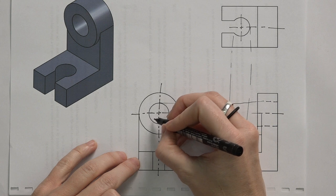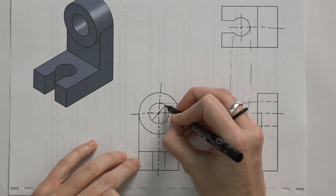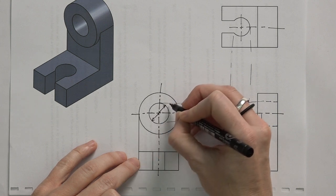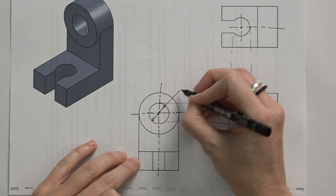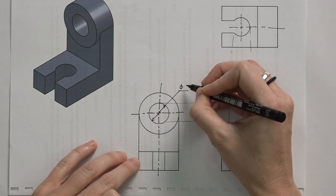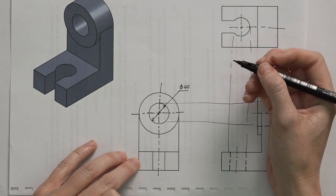So remember we had this before. We had a circle and we draw the dimension line through the center at a 45 degree angle to the cross. We extend it out and we have diameter 40 in this case.